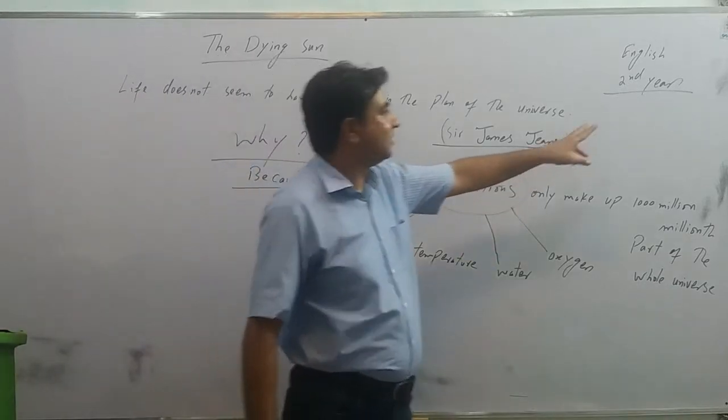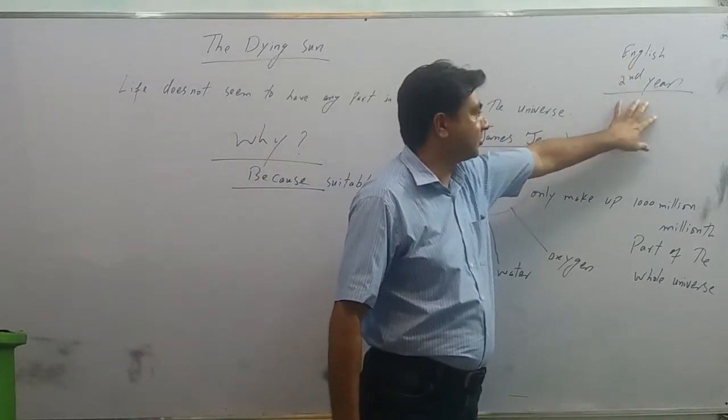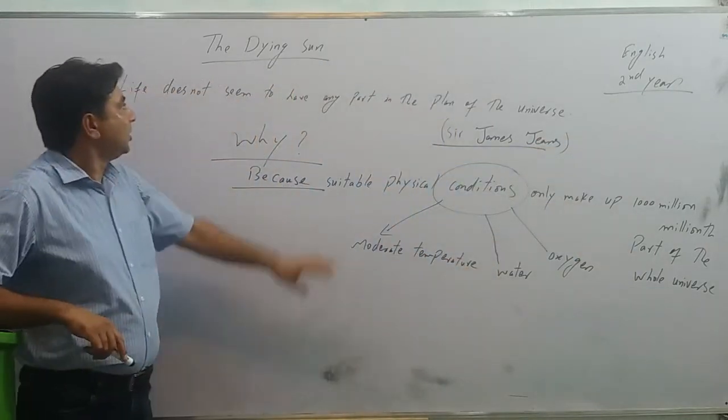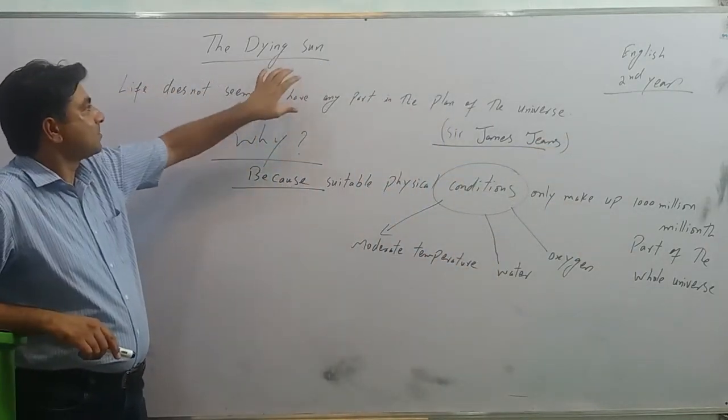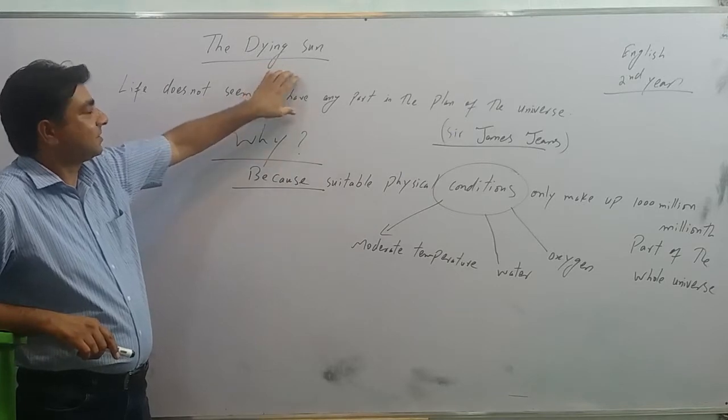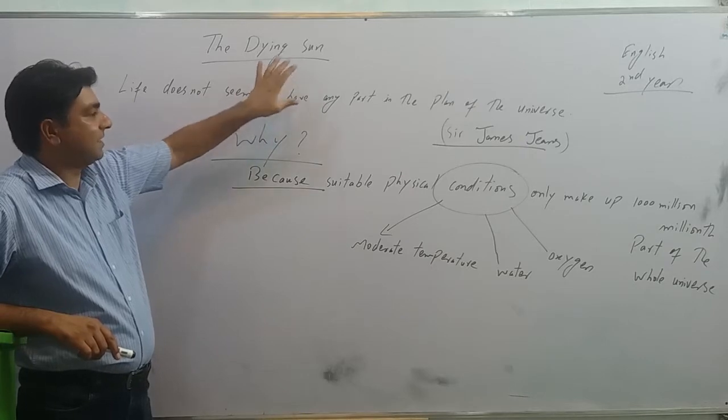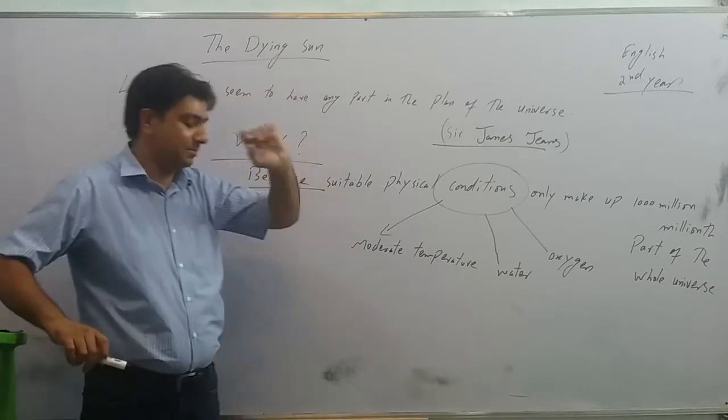This is Milal Adhan for the subject of English intermediate part 2. We were discussing the first lesson, the first essay of book 2 that is The Dying Sun written by Sir James Jeans.